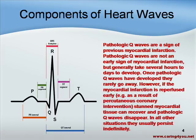Now let's talk about the QRS complex. Pathological Q waves are a sign of previous myocardial infarction. On a normal EKG, you would expect to see a slightly inverted Q wave — just slightly inverted. This will be the baseline for the Q. But if you see a very inverted Q wave, this is a sign of a previous myocardial infarction.